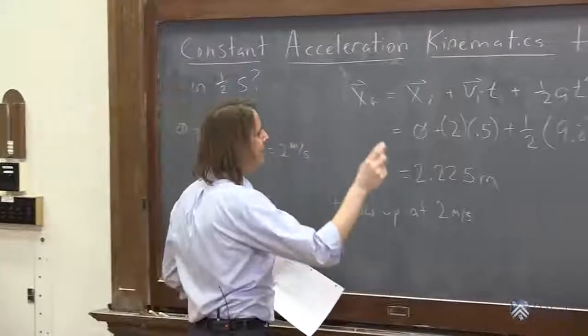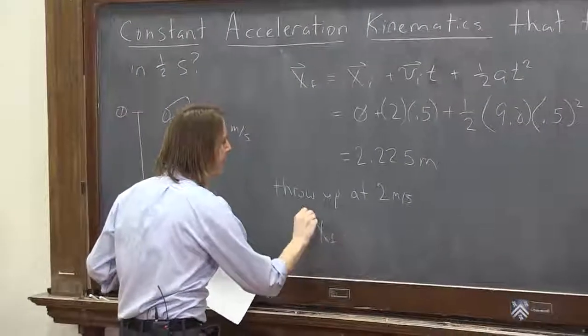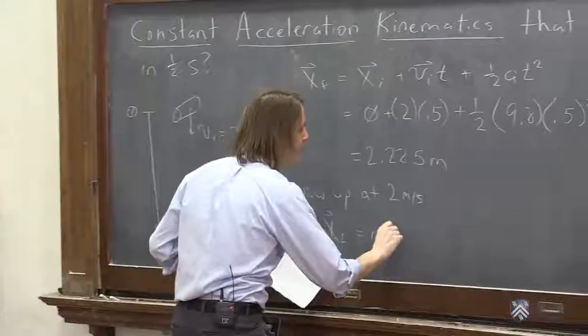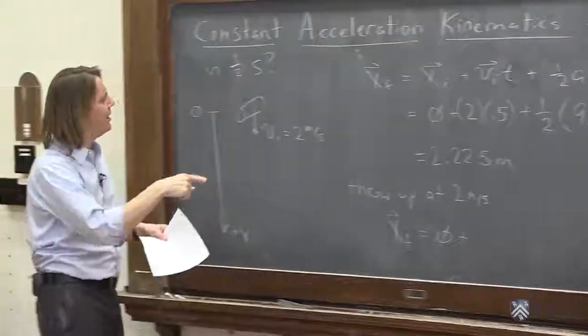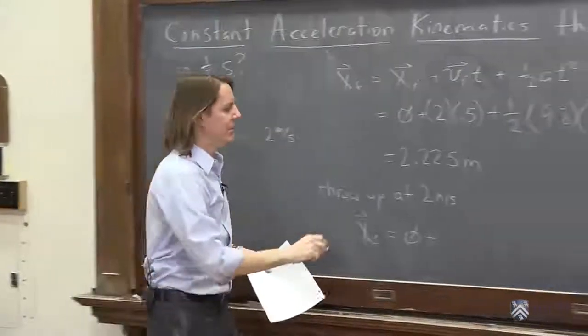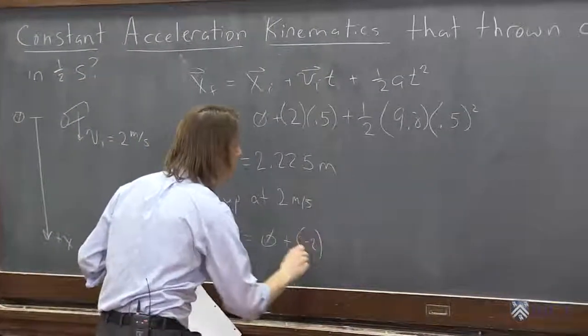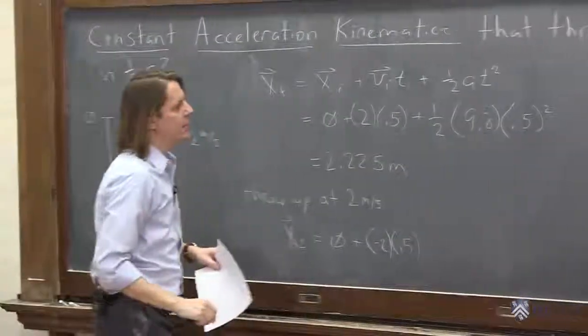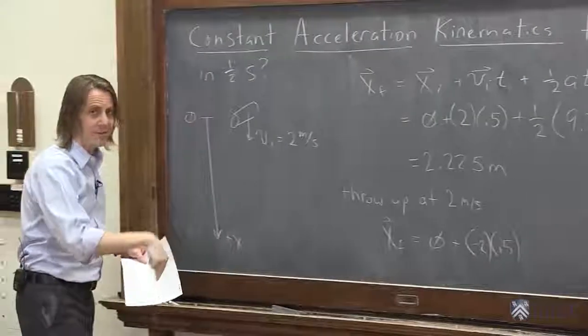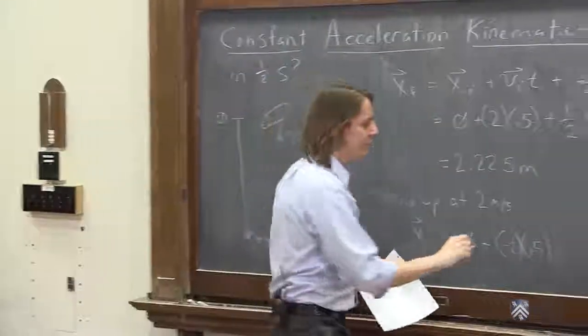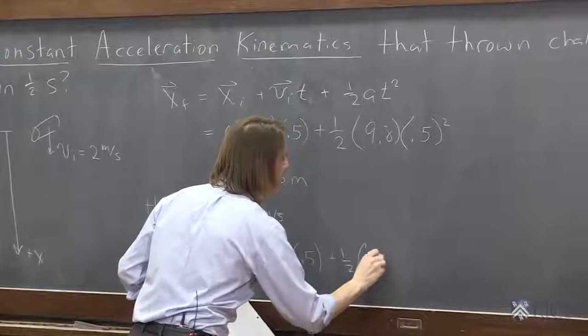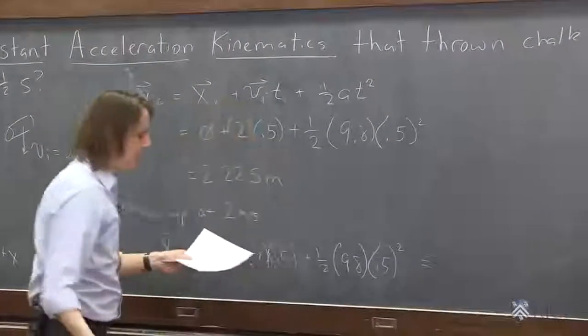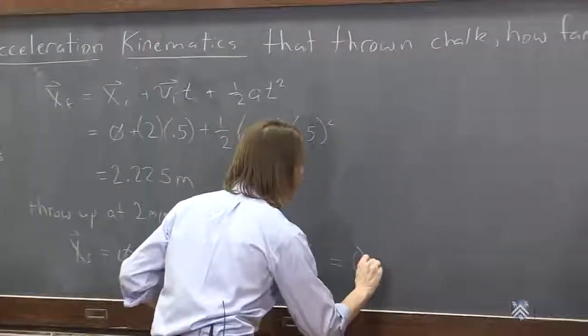How would this be different? Xf, let's see, x final would be the same equation. Initial is still 0, 0 meters per second. Plus, but now vi is negative, right? Because I threw it up, down is positive. So it'd be minus 2. Minus 2 times t is 0.5. And then the acceleration is still down. Gravity is always down. So plus 1 half 9.8 times 0.5 squared. And you put all that together, and I get 0.225.